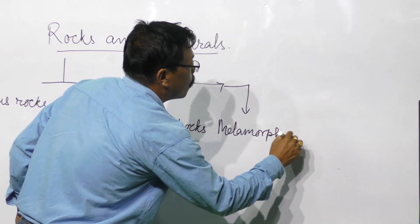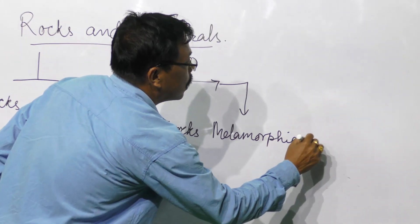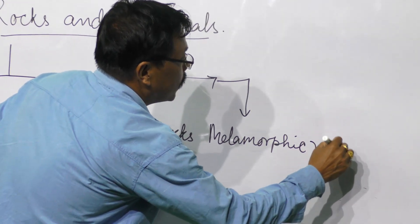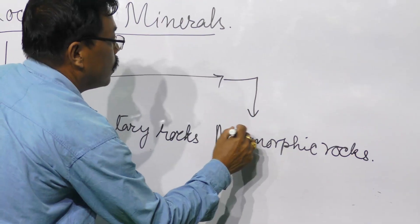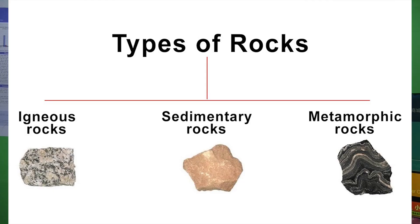Metamorphic rocks. First, igneous rocks — igneous rocks are the parent rocks.